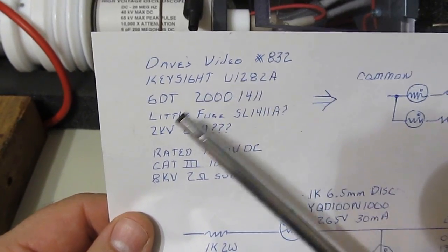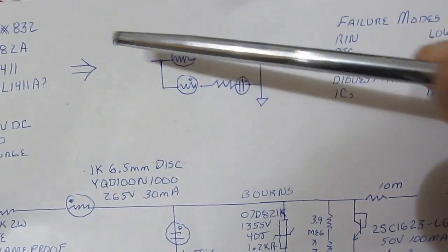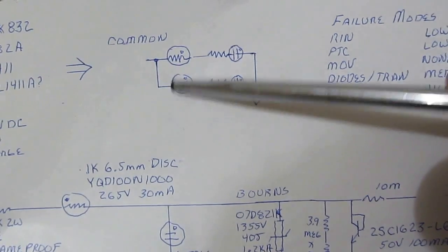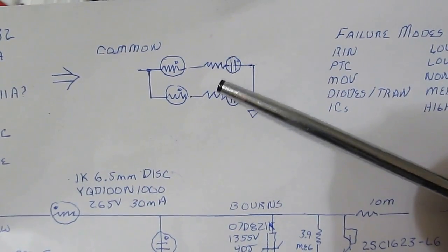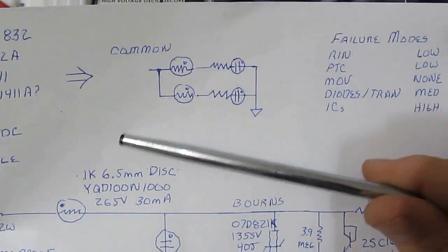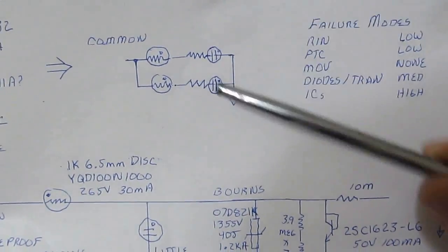So again, looking at Dave's video, we know that the part is marked 201411. If we look at the layout of the circuit board, there's the common input terminal that ties to two PTCs through a high voltage resistor, and into the gas discharge tube, and then return back through the ground path. These two circuits are in parallel, not in series.